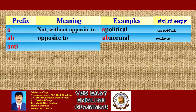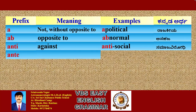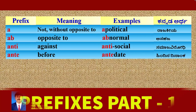Prefix 'Anti': its meaning is 'against'. Example: Anti-Social. Kannada meaning: Samaj Virodhi. Another prefix: 'Ante', its meaning is 'before'. Example: Antedate. Kannada meaning: Hindina Dhinakka Hagiya.